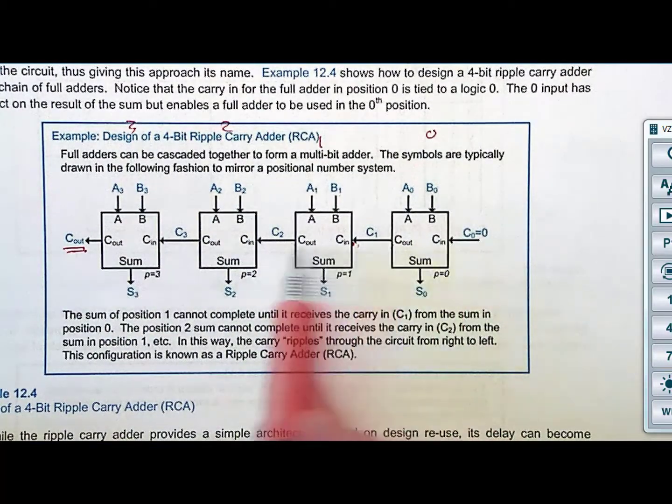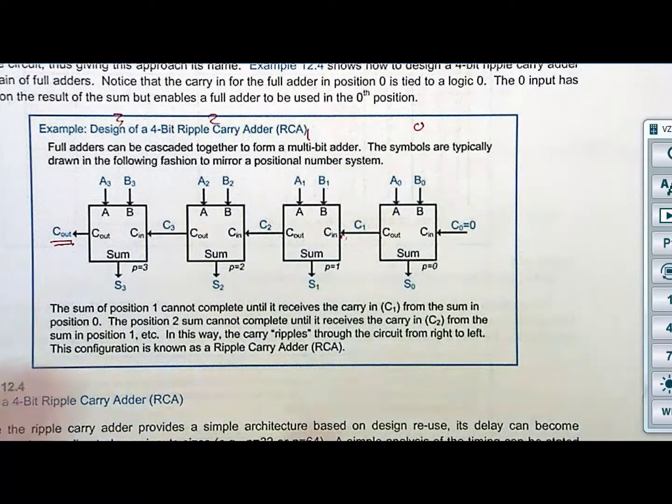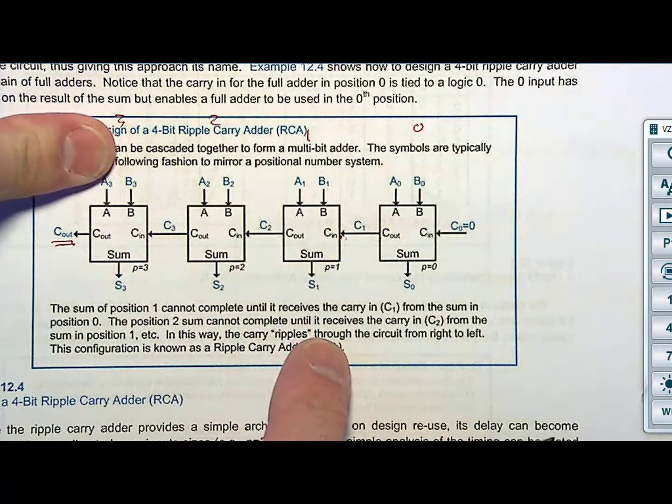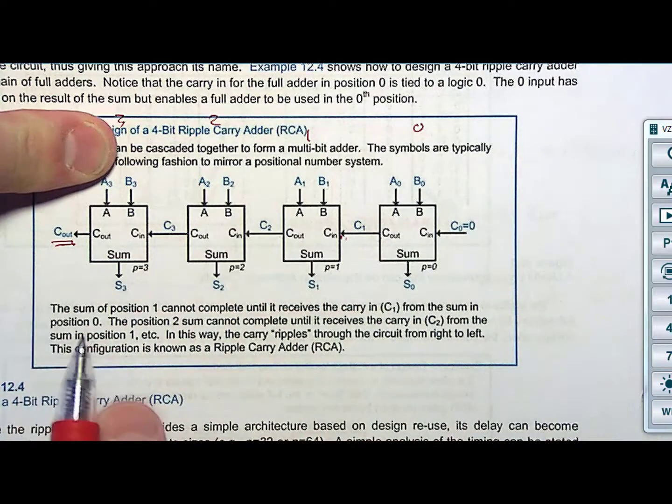here's your numbers, and then you go, and the sum comes out. But if you try to go faster and faster and faster, at some point you might change the input so fast that the output hasn't even had a chance to ripple through all the logic.